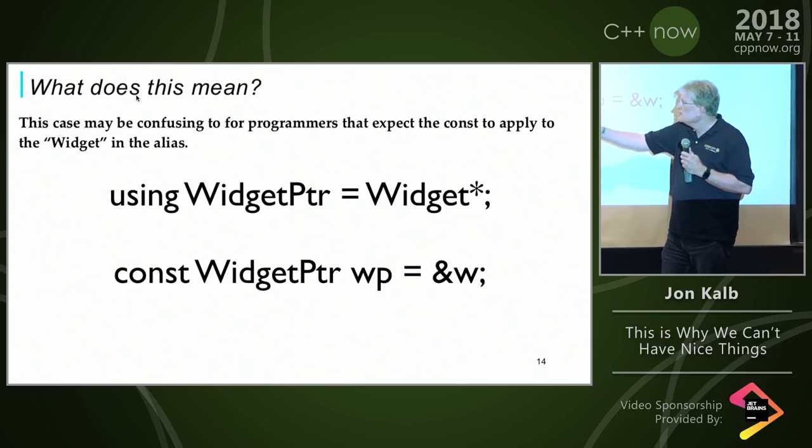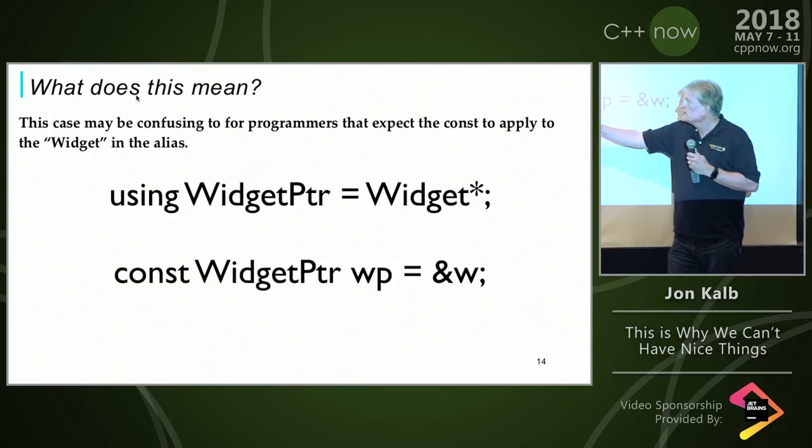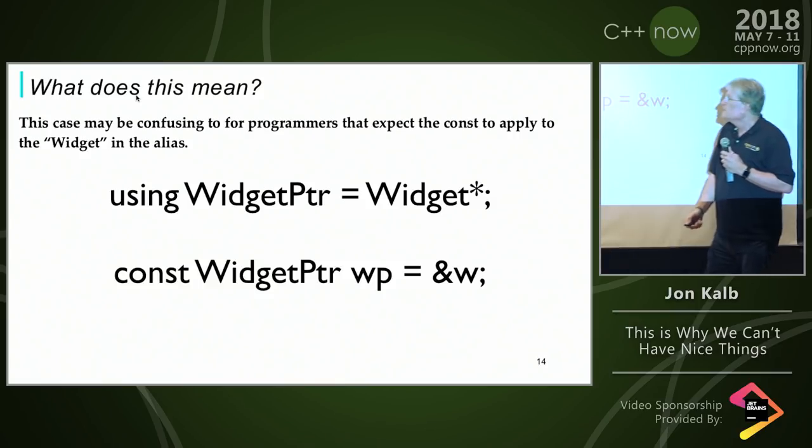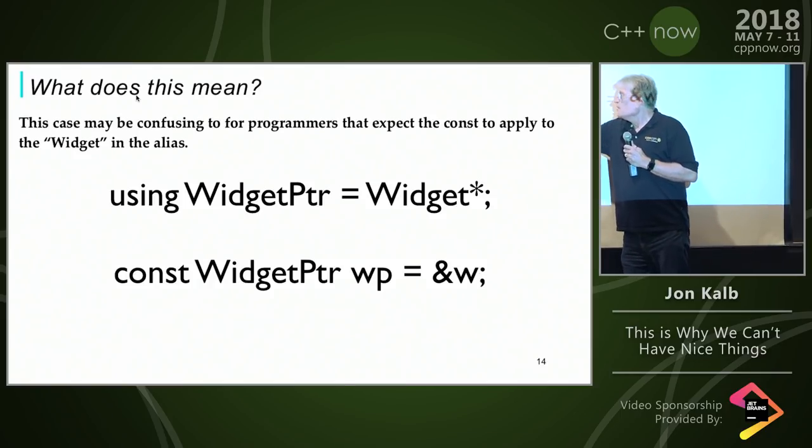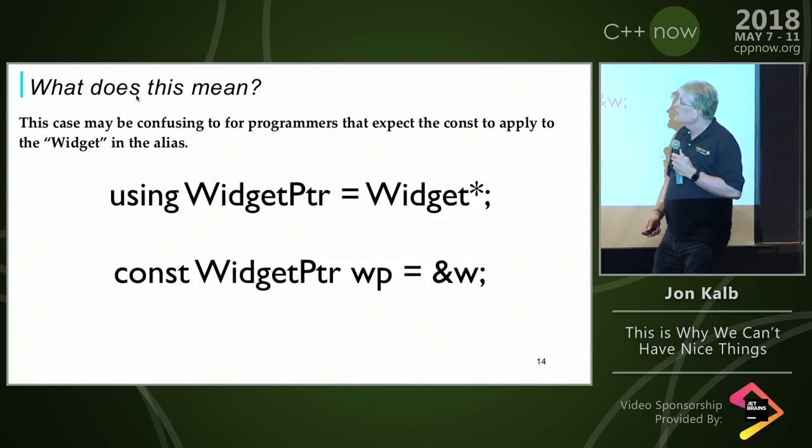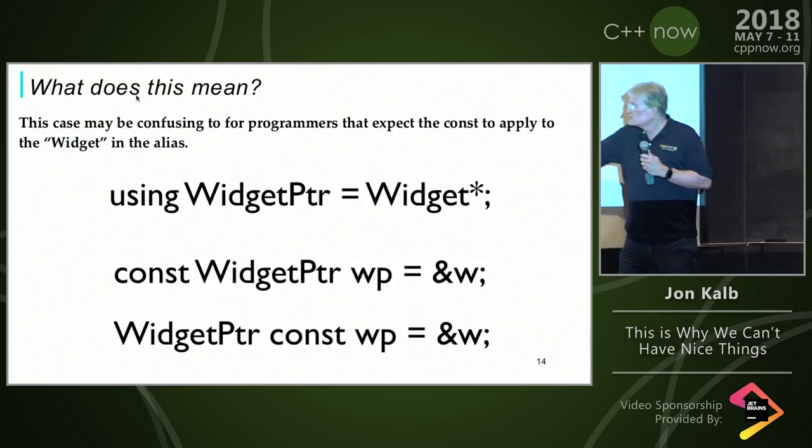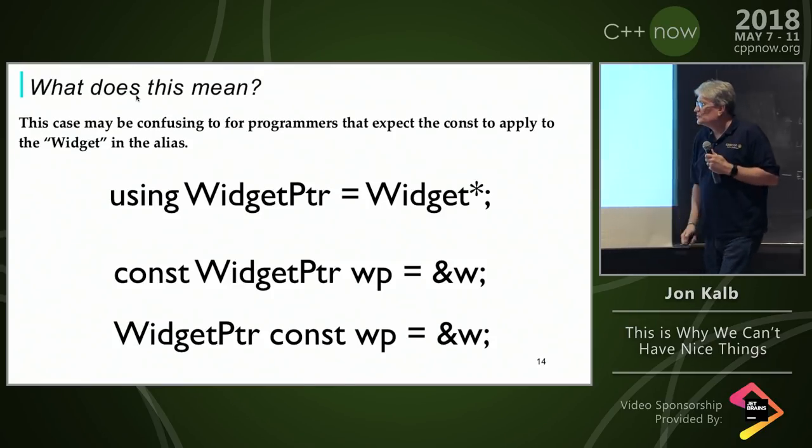No one in this room would, but someone reading your code might be confused and think that what's const here is the widget, because you're just taking a mental substitution of this into there and saying, what would I get if I put const on the left of that? But, of course, what we really know is that it's really the pointer that's const and not the widget.